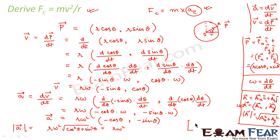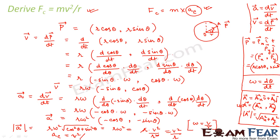We also know the relation between linear velocity and angular velocity: ω = v/r. Substituting this value of ω, we get r · (v/r)² = r · v²/r² = v²/r. Therefore we proved that centripetal acceleration is equal to v²/r. Since centripetal force equals mass into centripetal acceleration, centripetal force = m · v²/r. Hence we have derived this formula.